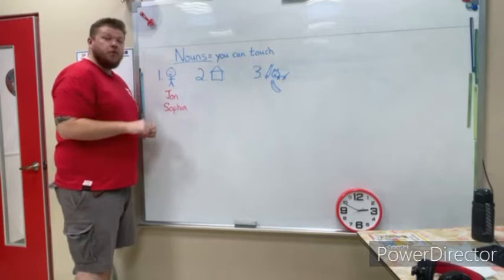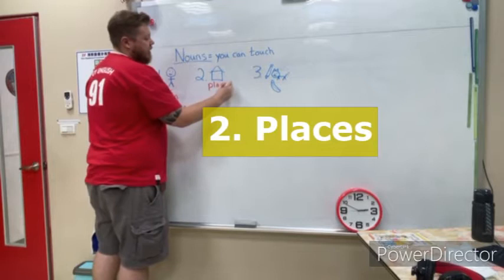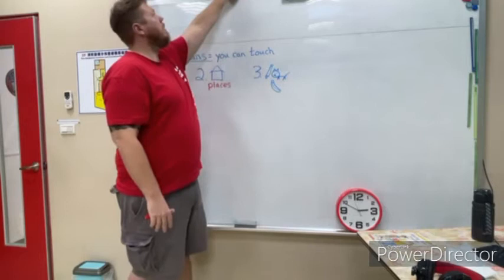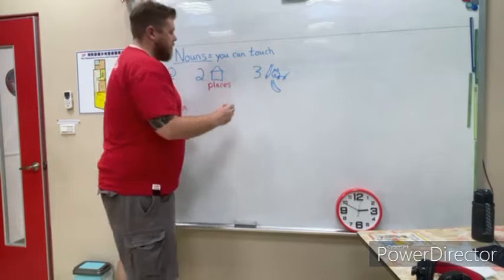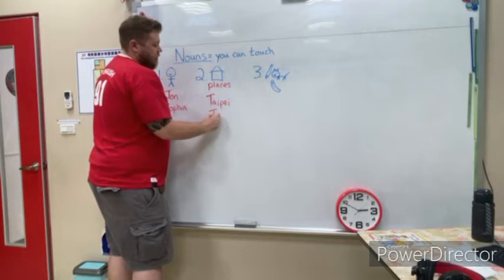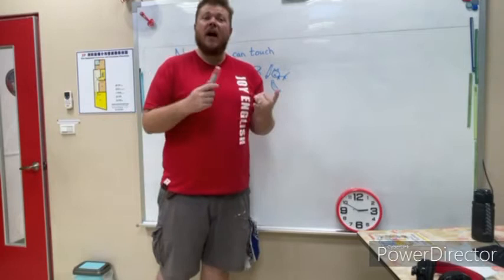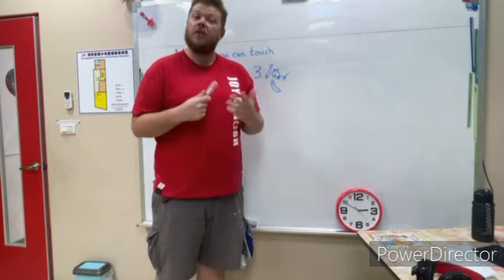Number two is place. Places are right here. P-L-A-C-E-S. Places. Places are where you can go to. Like I could say Joy School is a place. Can I touch Joy School? Yeah. It's a noun. Joy School is a noun. You could say Taipei is a noun, Taiwan is a noun, and the USA is a noun. Those are places that you can go and you can touch. The bathroom is a noun. The kitchen is a noun. All these places are places you can go. So they are nouns.